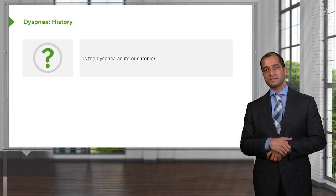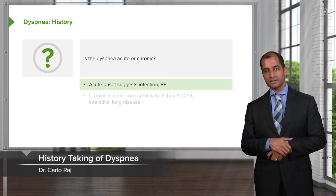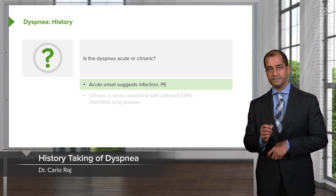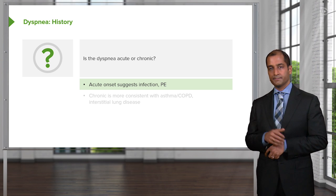History. Is the dyspnea acute or chronic? Acute onset suggests infection or maybe PE.